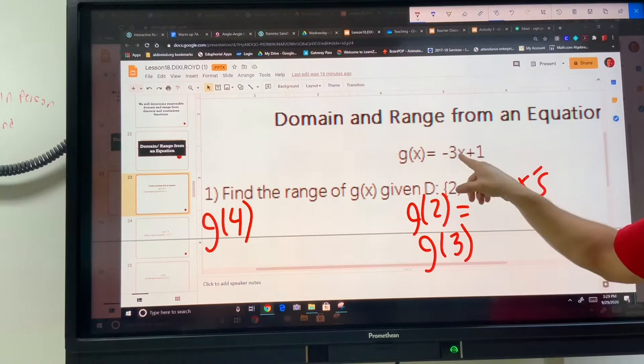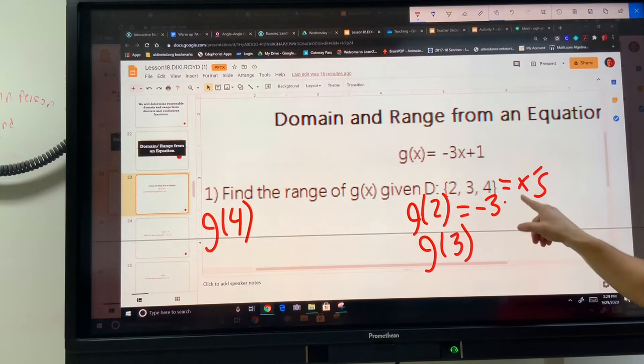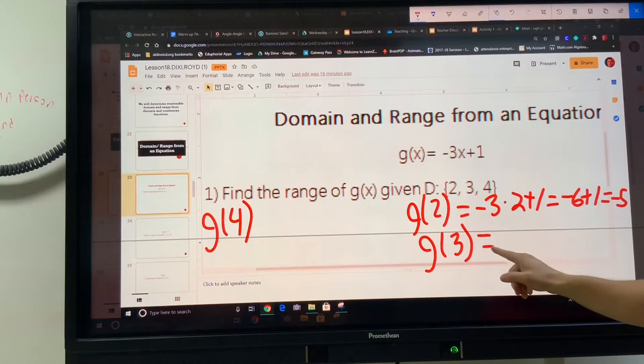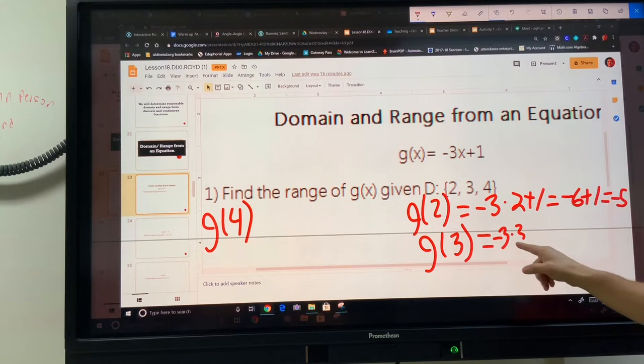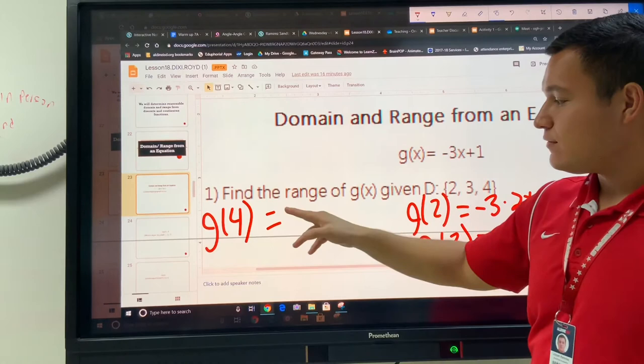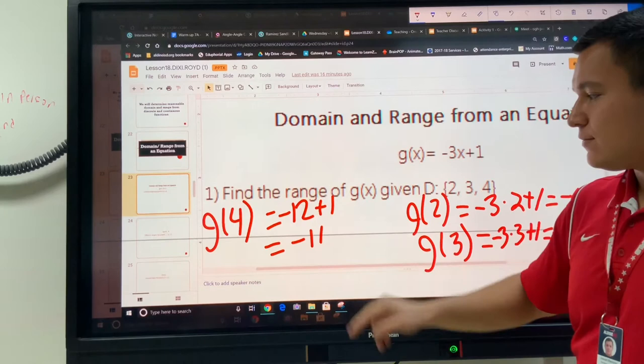If x was 2, then that would be negative 3 times 2 plus 1. That's negative 6 plus 1, which is negative 5. If x was the number 3, then that would be negative 3 times 3 plus 1, which is negative 9 plus 1, which is negative 8. If x was 4, then we're going to do negative 3 times 4 to make negative 12 plus 1, and this makes negative 11.